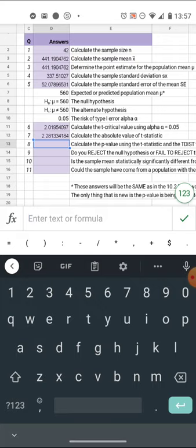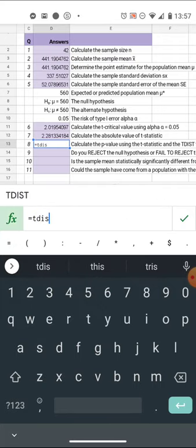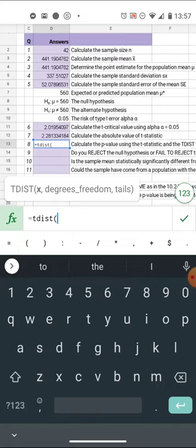But the point of 10.3 is we can now calculate a new beast, the p value. Let me try to type it manually. It is the absolute value of the t statistic - I don't know why they put an x there in the formula. The degrees of freedom, that's easy for us, that's 42 minus 1, and then the tails.